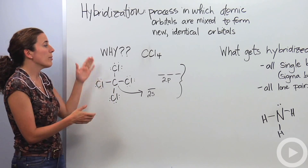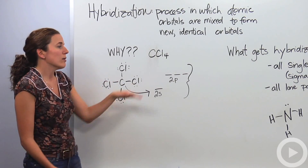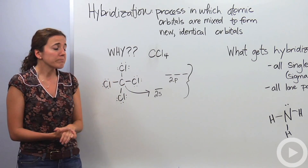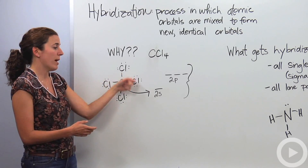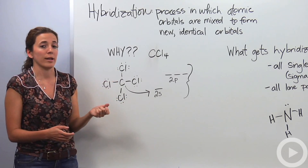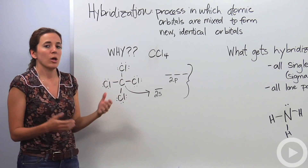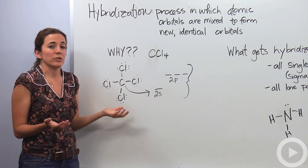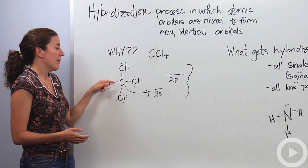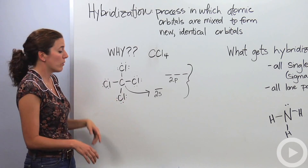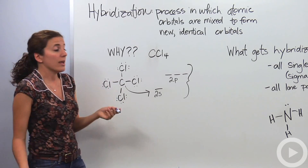So why is hybridization actually necessary? Let's start with an example of carbon tetrachloride. Carbon tetrachloride is a single carbon atom bonded to four chlorine atoms. We have to agree that all four of these bonds are equal in energy — one is not more energetic or more special than another. So how do we make sure that's the case?